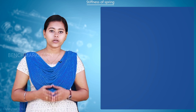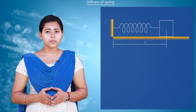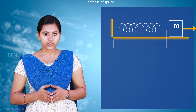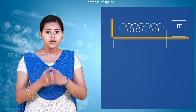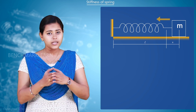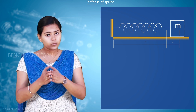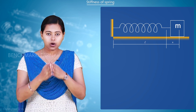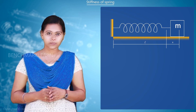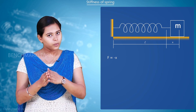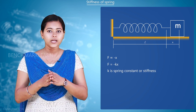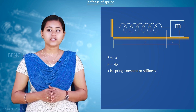Let's take a spring loaded with a mass m kept on a smooth frictionless table. If you pull the body in one direction, there will be an extension in the spring. Since the spring is disturbed, it will react to pull the body back — a restoring force is developed within the spring. This restoring force acts in a direction opposite to the extension produced, so we can write F proportional to minus x, that is F = -kx, where k is the proportionality constant called the spring constant or stiffness of a spring.